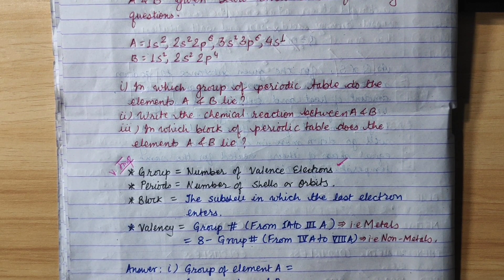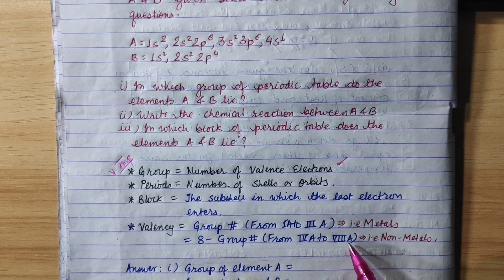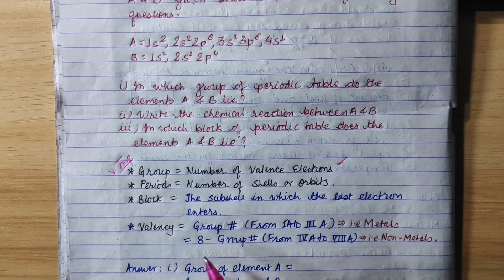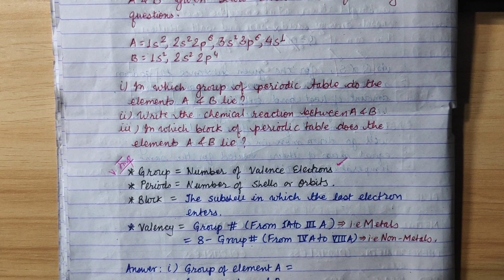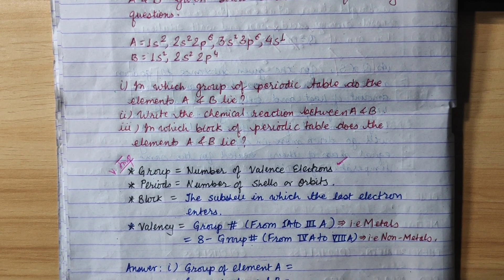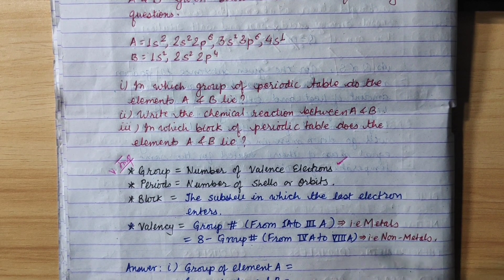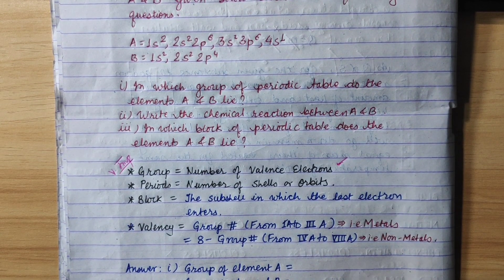This is the non-metallic group. Group 4A to 8A: group 7A has 8 minus 7 equals 1 valence electron, and group 8A has 8 minus 8 equals 0. This is the basic important idea needed to answer this question.